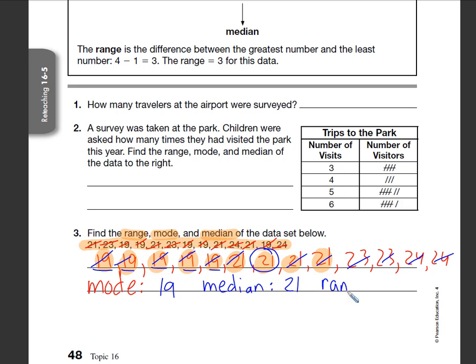Now the range, range means you take the largest number and you subtract the smallest number. So my range here, my largest number would be 24, my smallest number would be 19. So 24 minus 19 equals 5. So my range is 5.